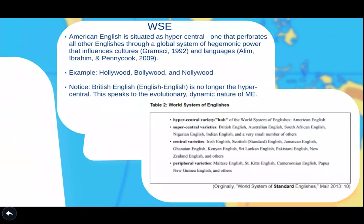Here we have the world system of Englishes. We can see that there are four different levels, and we're mainly focused on the hypercentral variety and the supercentral varieties. The hypercentral variety is American English — it's the one that perforates all other Englishes through a global system of hegemonic power that influences cultures and languages. An example of this would be Hollywood as the norm, where Bollywood and Nollywood are derivatives of that norm. Also notice that British English is no longer the hypercentral variety, which speaks to the evolutionary and dynamic nature of Modulated Englishes.